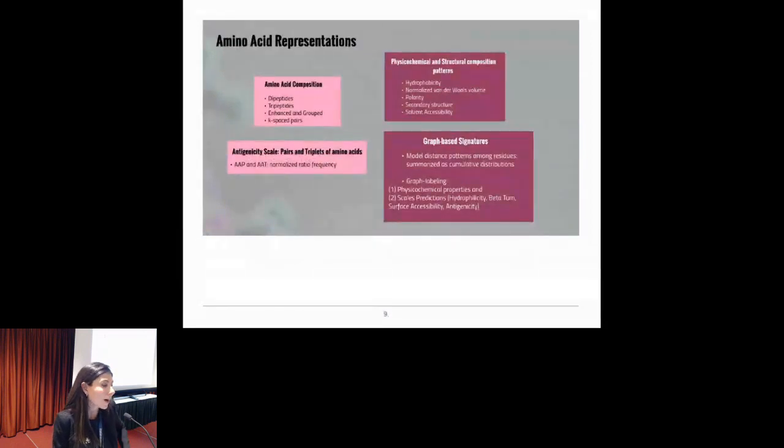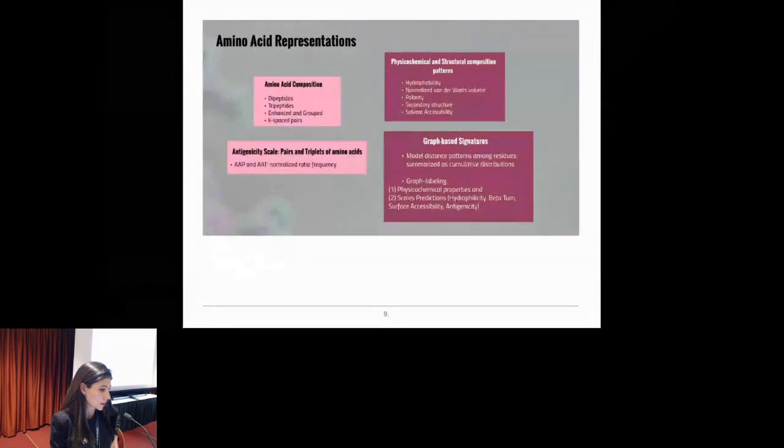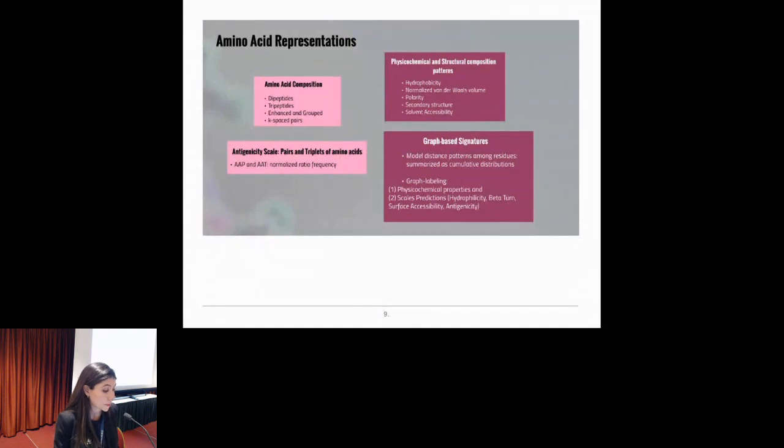Regarding how we aim to represent all this antigen protein sequence to help our model to learn the distinguishing between them, we also analyze well-known features within this field, like amino acid composition in a variety of groups, also antigenicity scale in terms of pairs of amino acids and triplets of amino acids. We also evaluated some physical, chemical, and structural composition patterns like hydrophobicity, solvent accessibility, and many others.